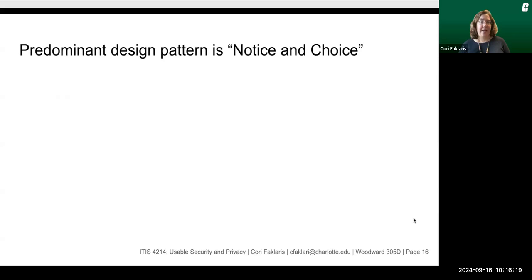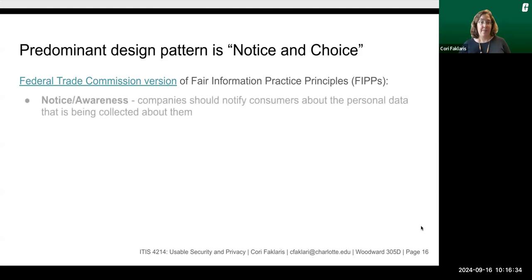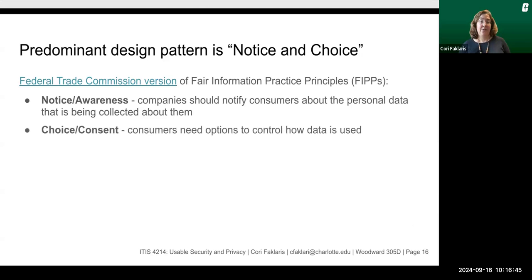The predominant design pattern for how sites and apps collect this data and get our consent is called notice and choice. This brings me to the Federal Trade Commission version of what's called the Fair Information Practice Principles, or the FIPPs. One principle is notice or awareness: companies should notify consumers about the personal data being collected about them. Then choice or consent: consumers need options to control how data is used.